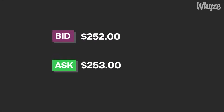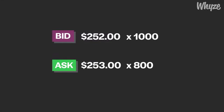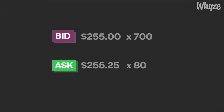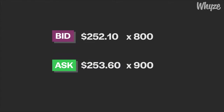The bid and ask are also both accompanied by a size number, which lets you know how many shares are available at the bid and ask prices. Throughout a trading day, a stock can have multiple combinations of bid and ask prices and sizes as they are updated in real time, just like the stock price itself. At any given time, only the best possible prices to buy and sell a stock will be shown as the bid and ask.